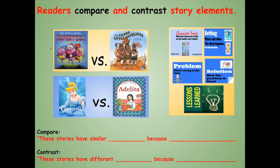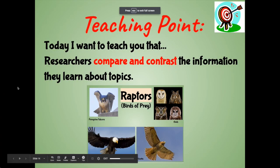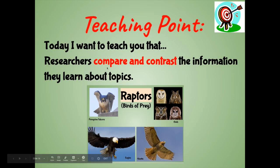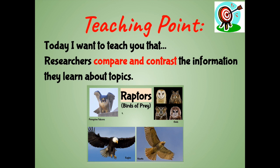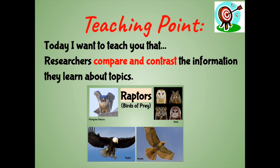Then we went even deeper when we read traditional literature and fables. We compared and contrasted story elements like character traits, setting, problem, solution, and the morals and lessons learned in books like The Three Little Super Pigs and The Three Little Javelinas, and Cinderella and Adelita. As you can see, we've done comparing and contrasting in a lot of different genres. Today we're going to try it using informational texts. Researchers compare and contrast the information they learn about topics. Today let's take a close look at peregrine falcons and hawks, and think about the ways that they are similar and different.